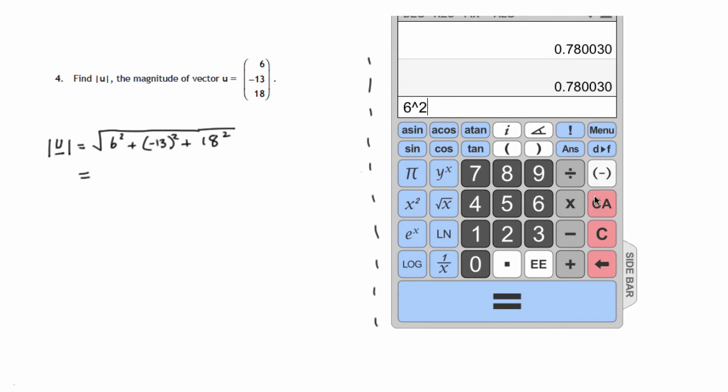6 squared plus negative 13 times negative 13 is the same as 13 times 13, so we're just doing positive 13 squared. Negative times negative is positive, so if you square a negative number you'll get a positive answer, plus 18 squared.